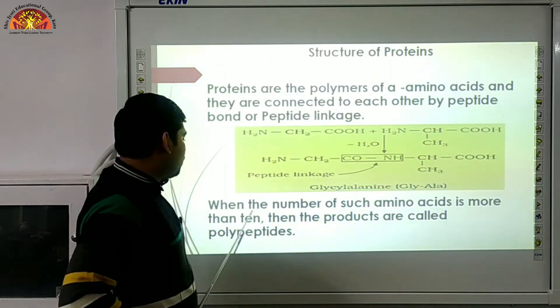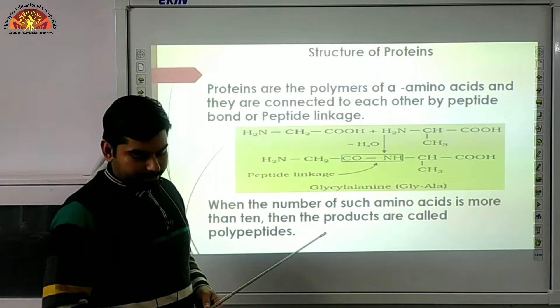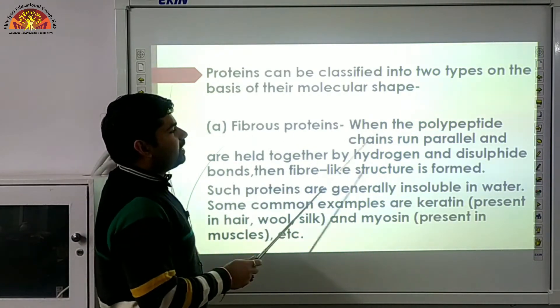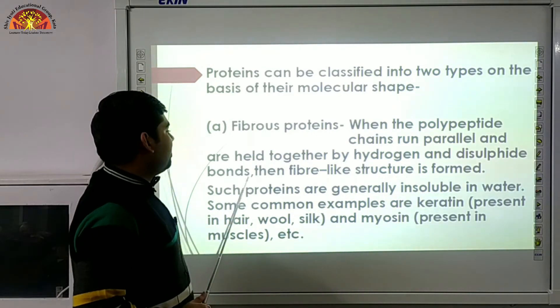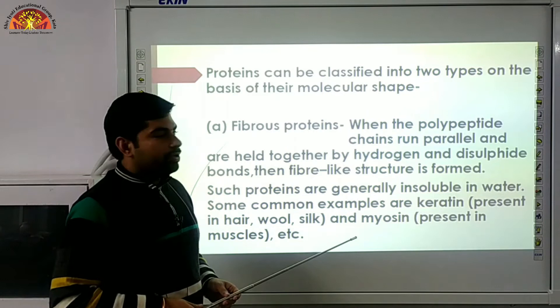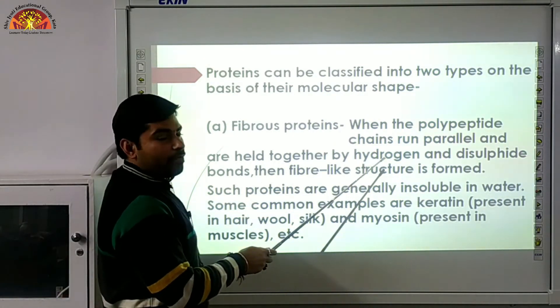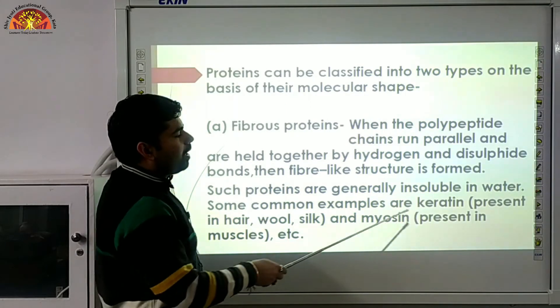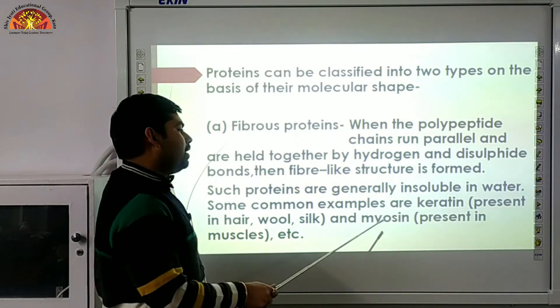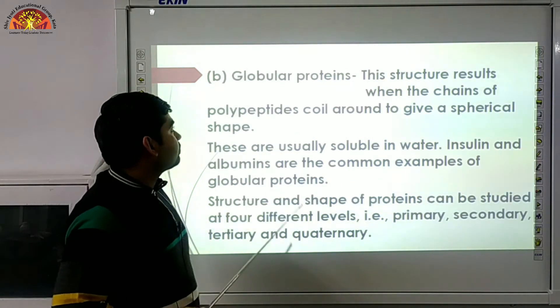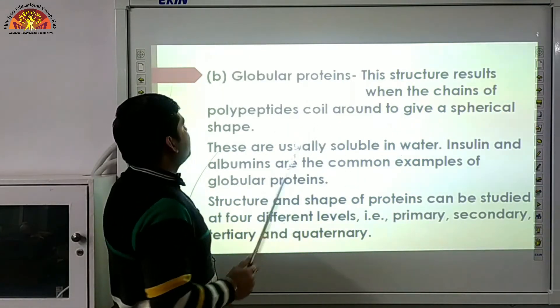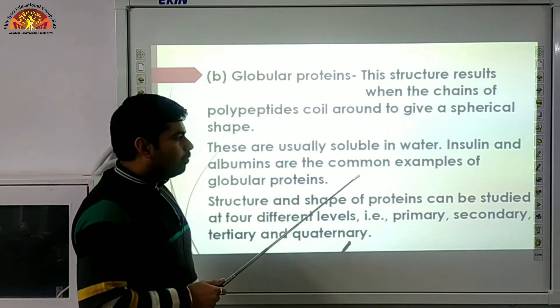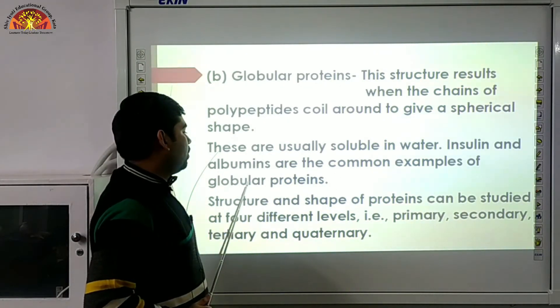When the number of such amino acids is more than 10, the products are called polypeptides. Proteins can be classified into two types on the basis of their molecular shape. Number one, fibrous protein - when the polypeptide chains run parallel and held together by hydrogen and disulfide bonds, then fiber-like structure is formed. Such proteins are generally insoluble in water. Some common examples are keratin which is present in hair, wool, silk and myosin present in muscles. Globular protein - this structure results when the chain of polypeptide coils around to give a spherical shape. These are usually soluble in water. Insulin and albumin are common examples of globular protein.